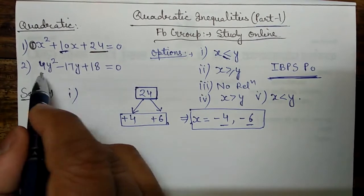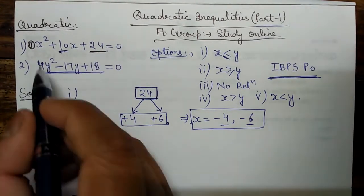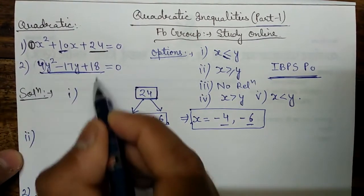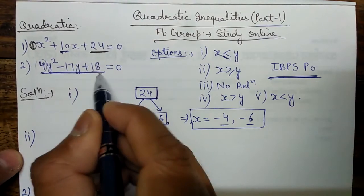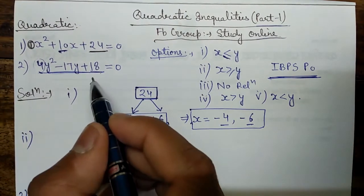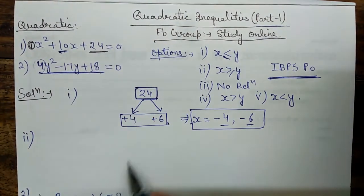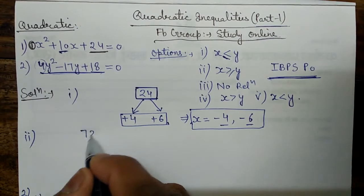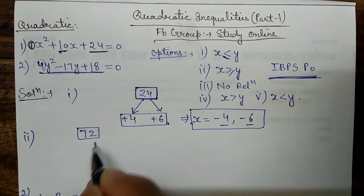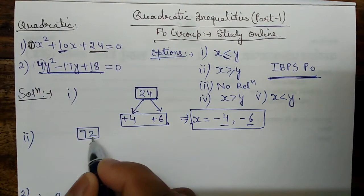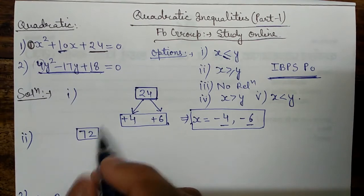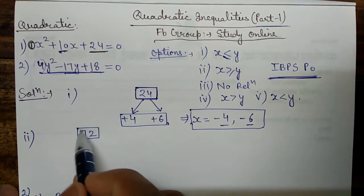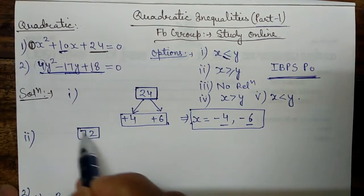Now for the second equation: the coefficient of y² is 4 and the constant value is 18. If we multiply them, we get 72. We have to split 72 in such a way that by adding we get the coefficient of y, and by multiplying we get 72 again.